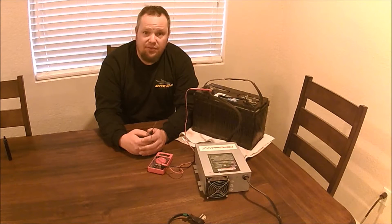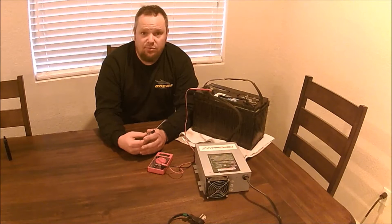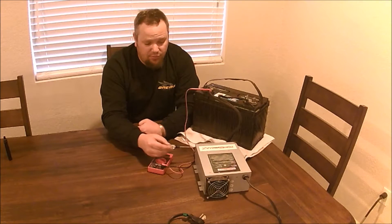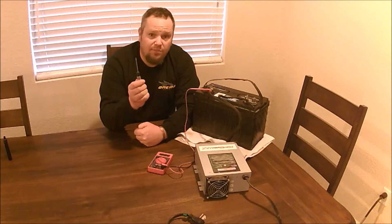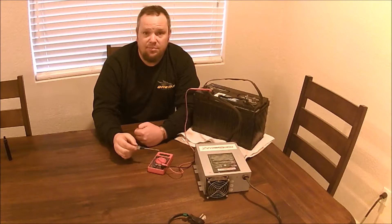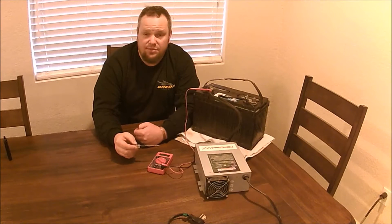All you need to do the modification is a drill with the appropriate size drill bit to drill out the four rivets, a small Phillips screwdriver, and a digital multimeter to monitor the voltage while you make the adjustment.